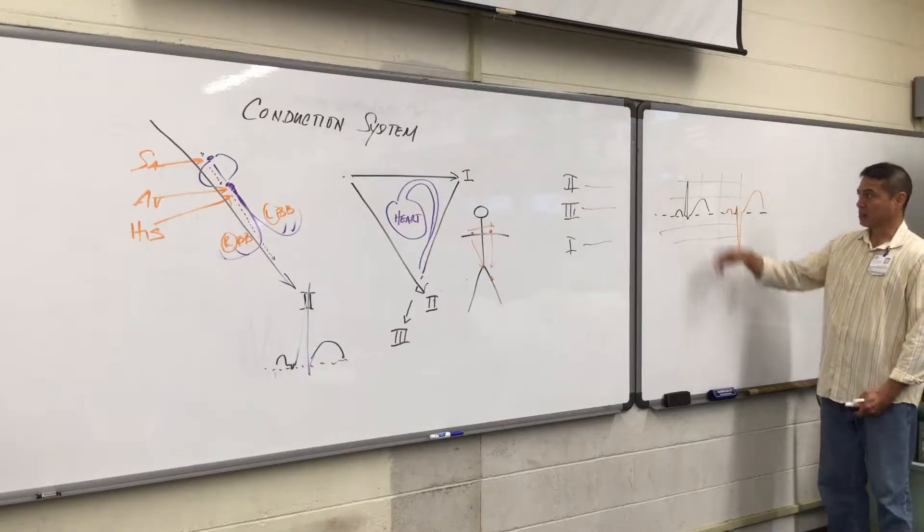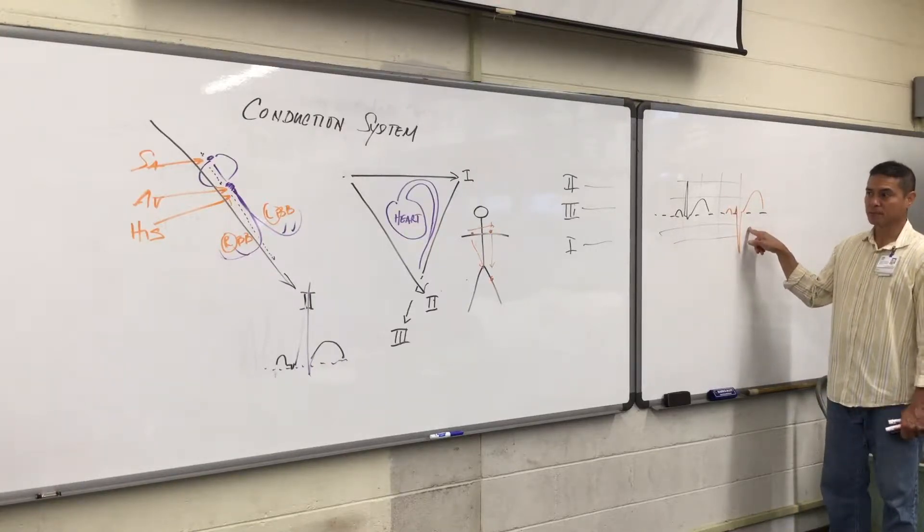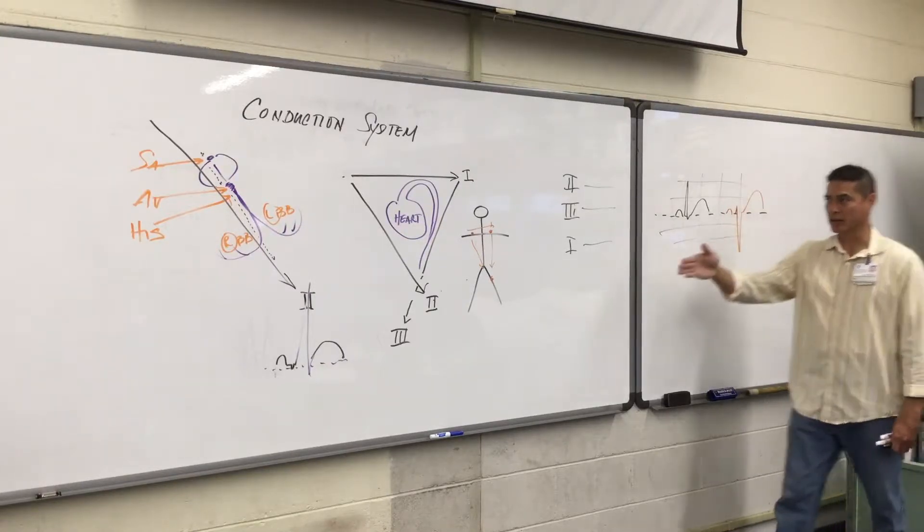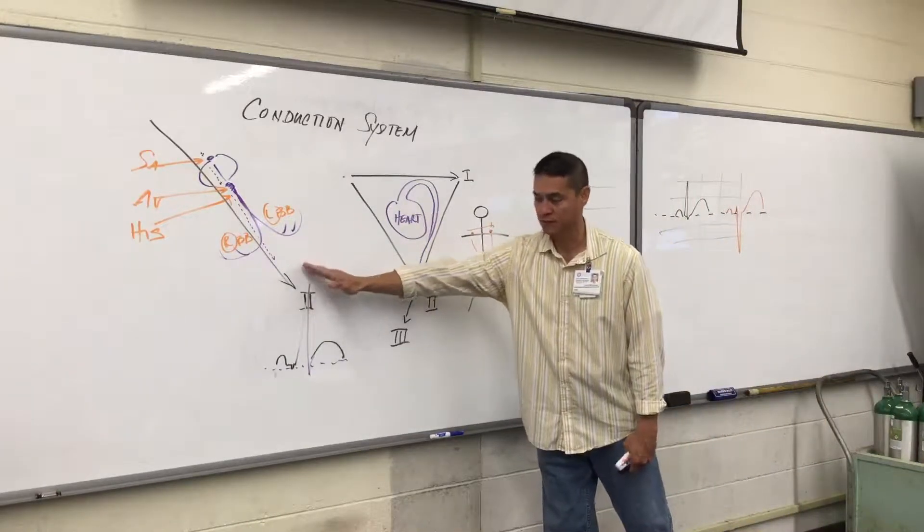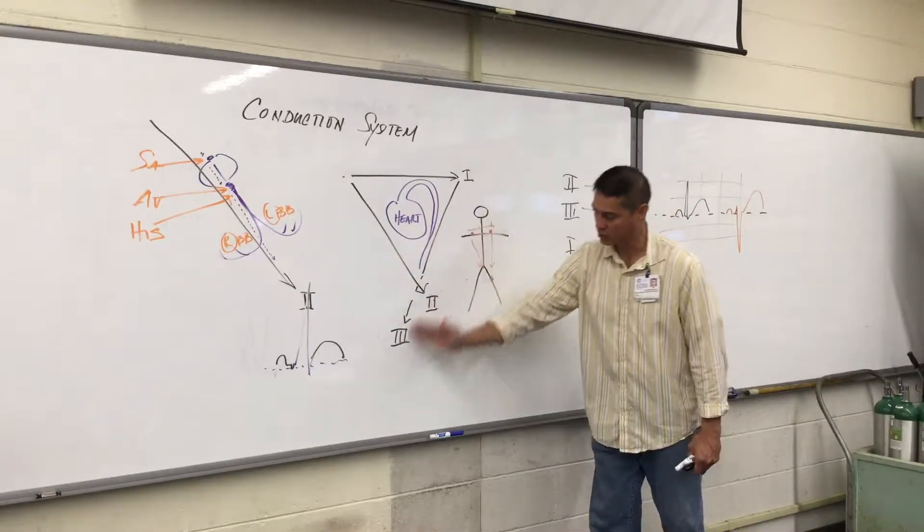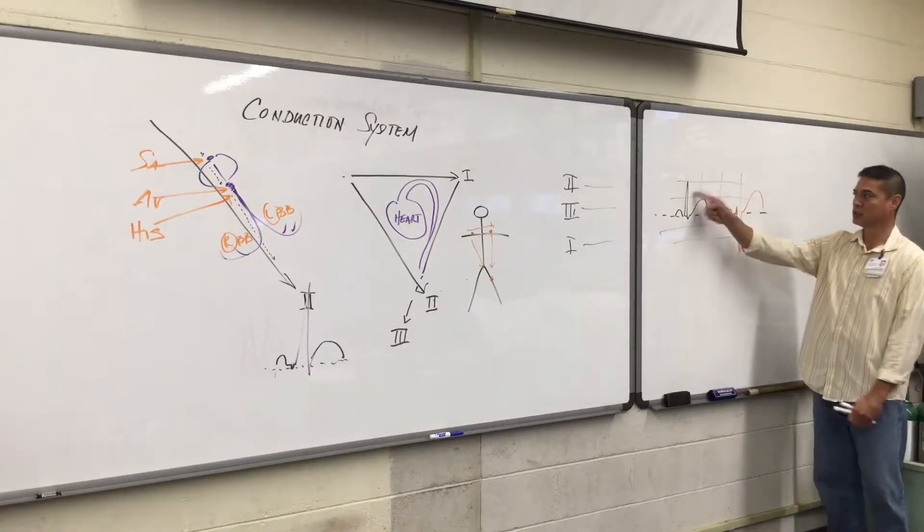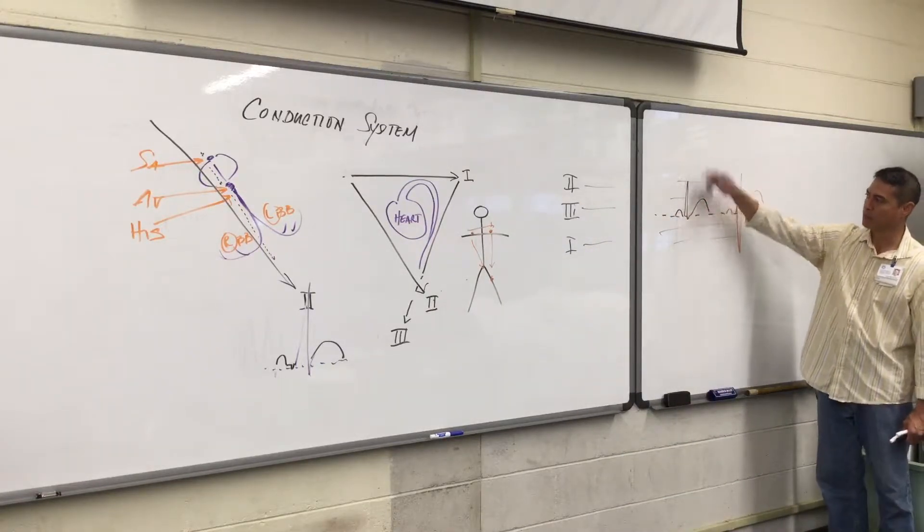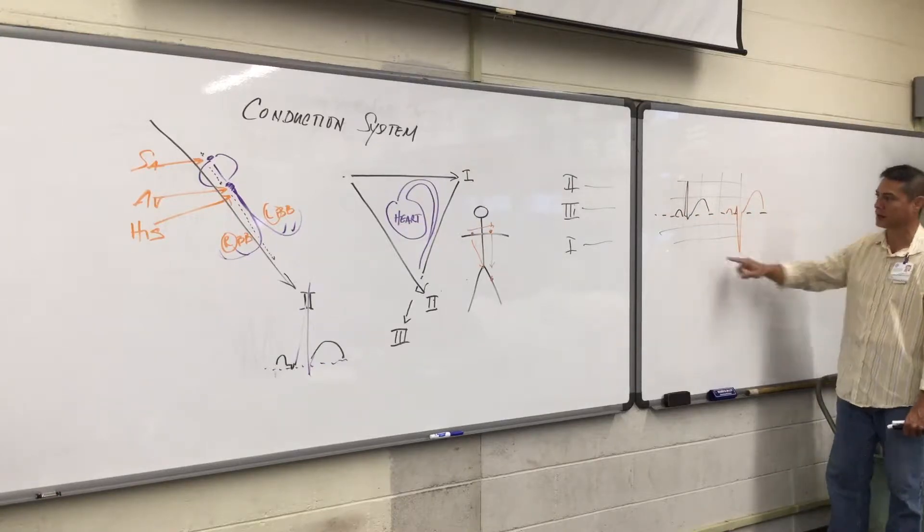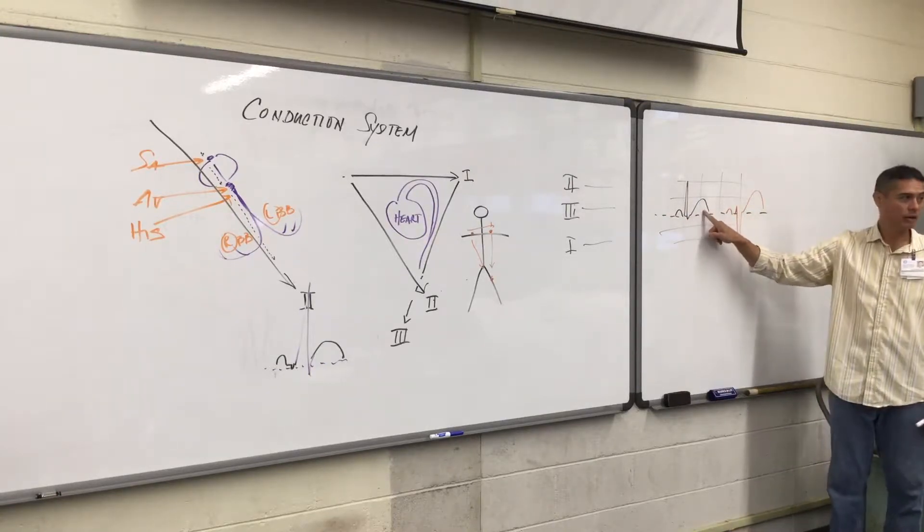What we see is either a positive or negative deflection. Usually if the energy is flowing in that pattern or direction, as we mentioned, it goes down towards the feet. Here we have lead 3 going towards the feet. These EKG complexes in 2 and 3 should be mostly positive up from this imaginary baseline where we see the P wave, the QRS, and T wave.